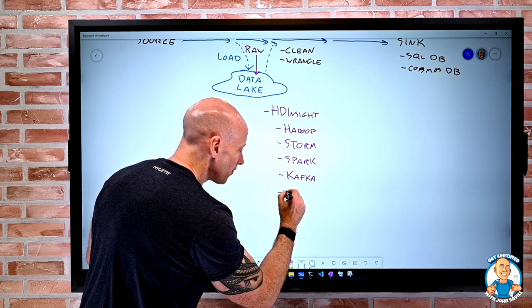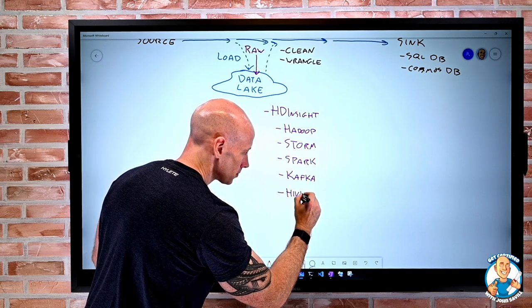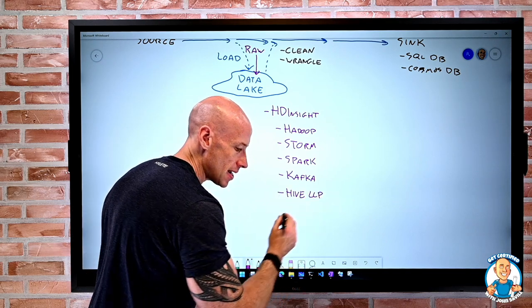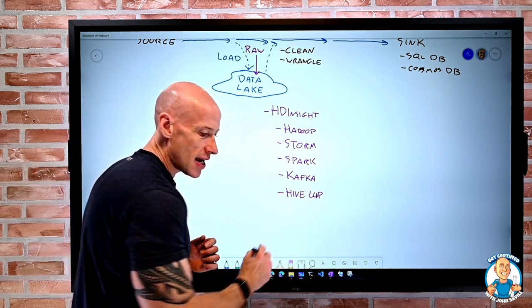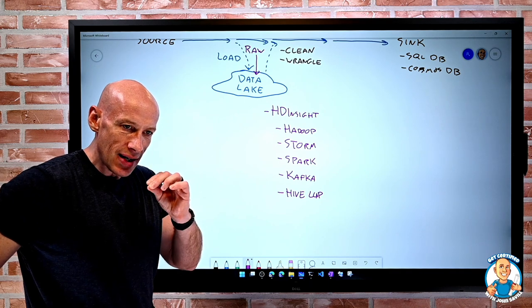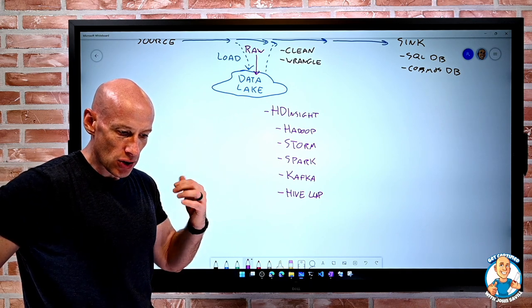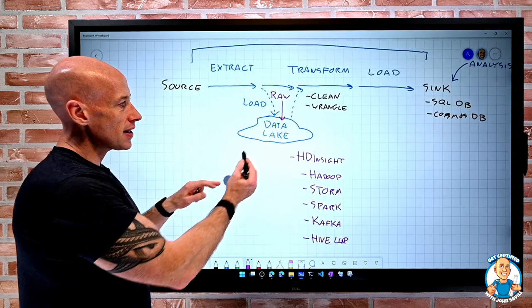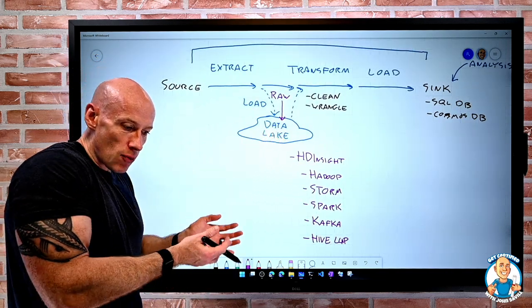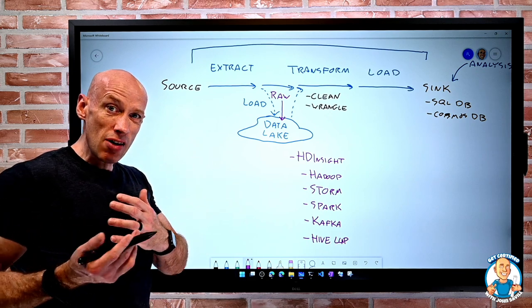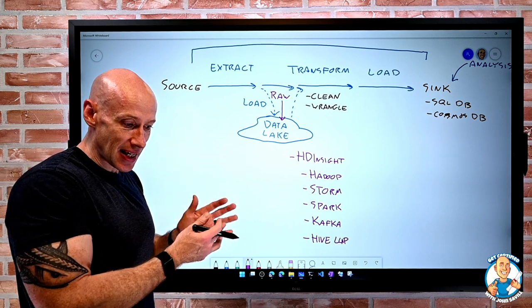Then there's things like Hive. Hive LLAP. So this is, L-L-A-P, interactive query. So I can query data live from the store. So if the data is sitting in this data lake, for example, instead of having to bring it somewhere else, I can actually query it directly in the data lake and get those results.